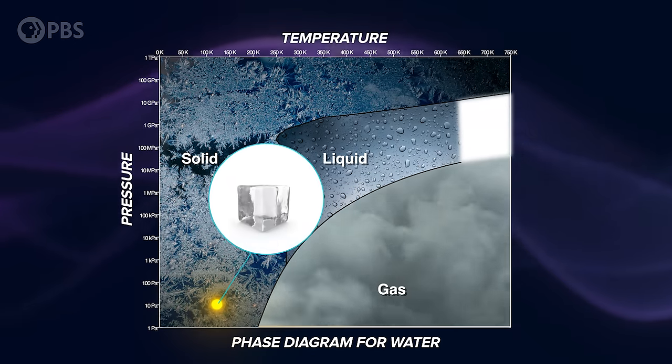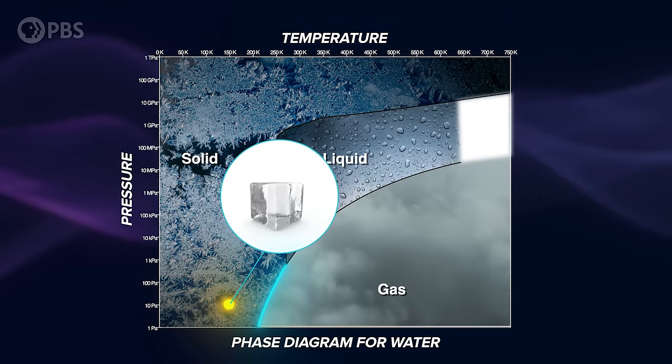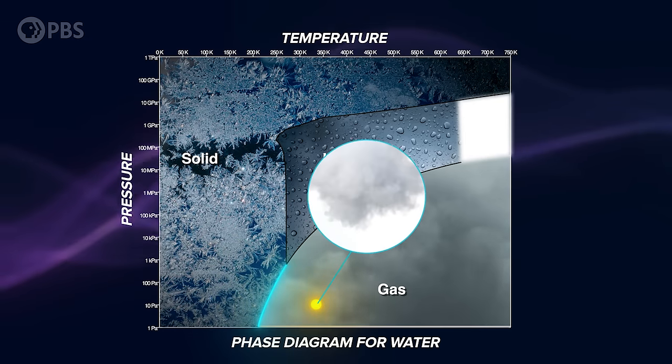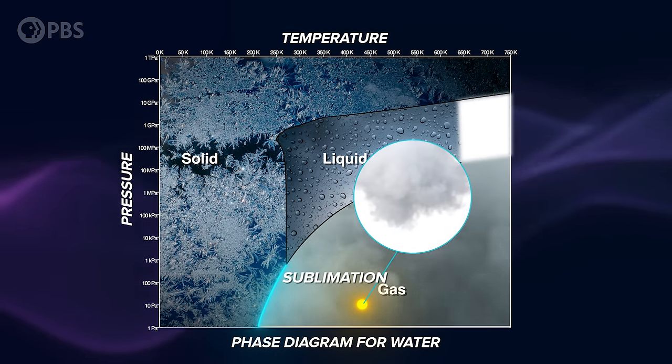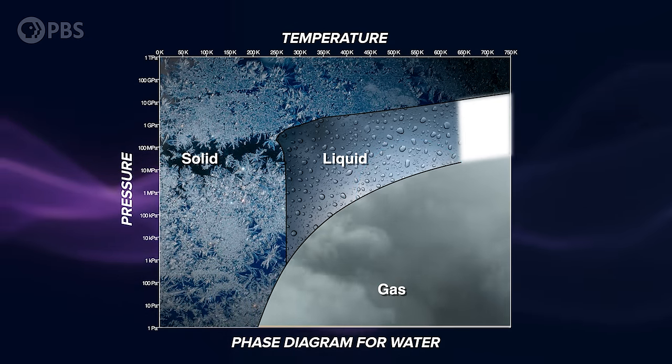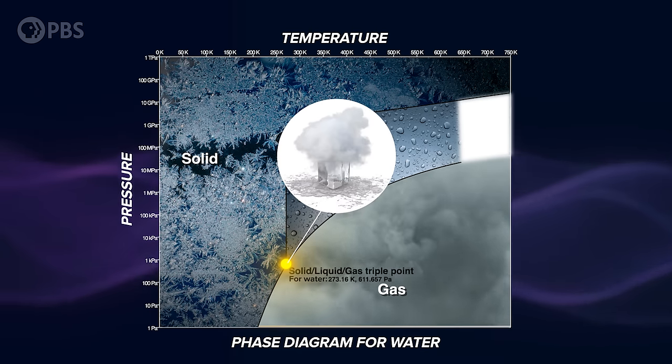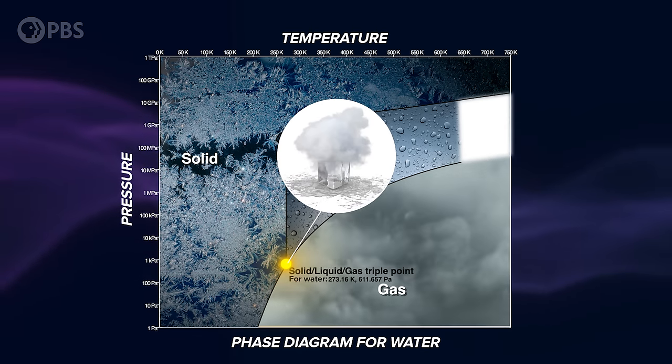For example, at low pressure, there's a boundary where increasing temperature takes you directly from solid to gas. We call that sublimation. And there's this so-called triple point where all three states of matter exist simultaneously.